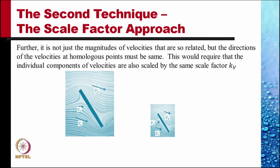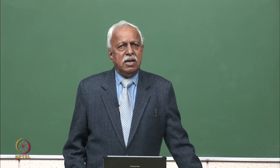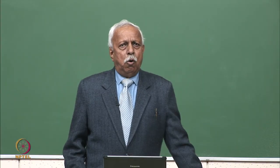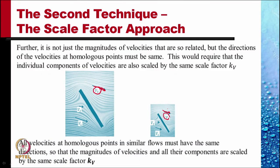Furthermore, it is not just the magnitude of velocities that must be so related — the direction of the velocities at the homologous point must also be the same. This requires that the individual components of velocity are also scaled by the same scale factor k_V. Not only is the velocity v3 in the prototype scaled relative to v3 in the model at the homologous point, but the directions of the velocities are exactly the same. This means the components of velocities in the two flows are related by the same scale factor k_V at all homologous points.